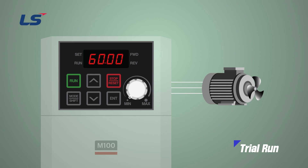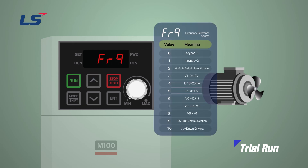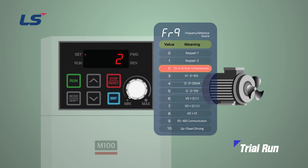Use the up and down arrow keys to navigate to the frequency parameter, and change its value to 2, which corresponds to the built-in volume on the right side of the M100 keypad. Set to 2 to continuously change the target frequency with the built-in volume.